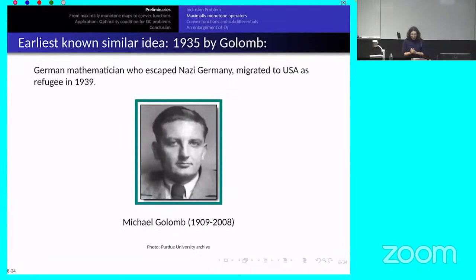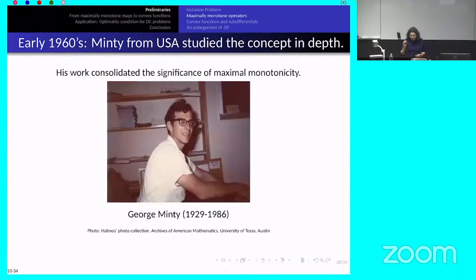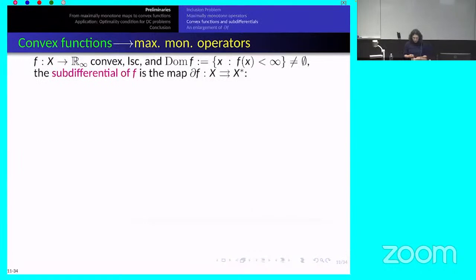The concept of maximally monotone operator can be traced back to Goulomb, a German mathematician who had to escape the Nazi era and went to the US. It was independently rediscovered by Zarantonello, an Argentinian mathematician who used it for solving functional equations. But the person who truly established the fundamental properties of maximally monotone operators and gave them their rightful position in functional analysis was Minty in the 1960s — his papers are highly recommended.